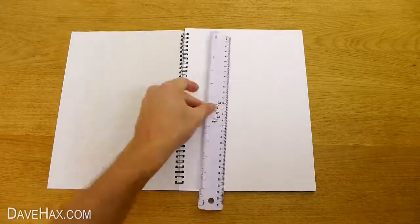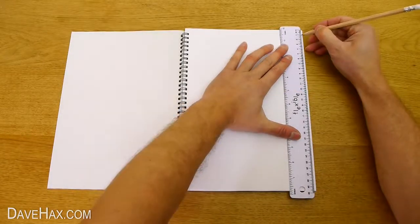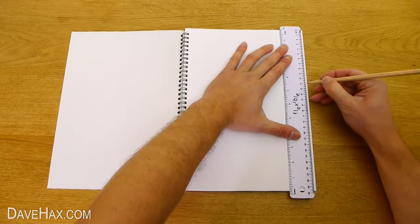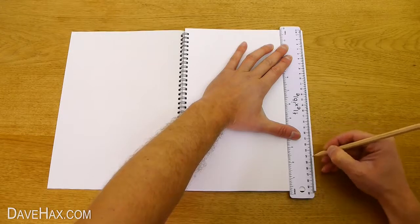Start by taking a piece of paper and using a ruler and a pencil, put a dot all the way down the side of the paper at regular intervals. I'm doing one every centimeter.